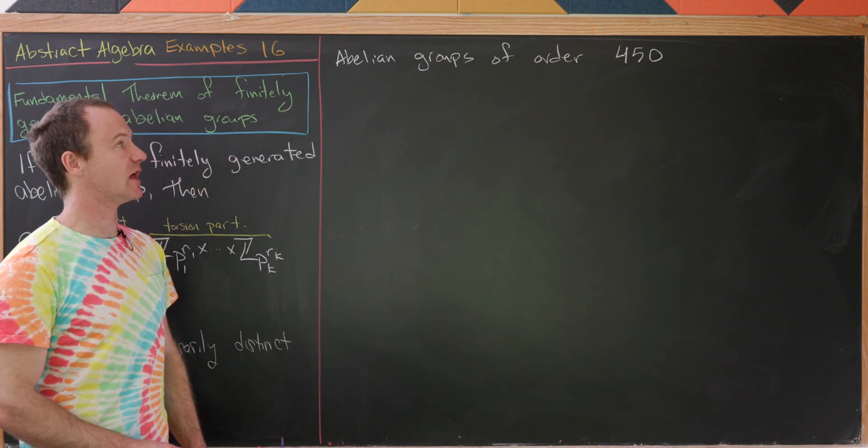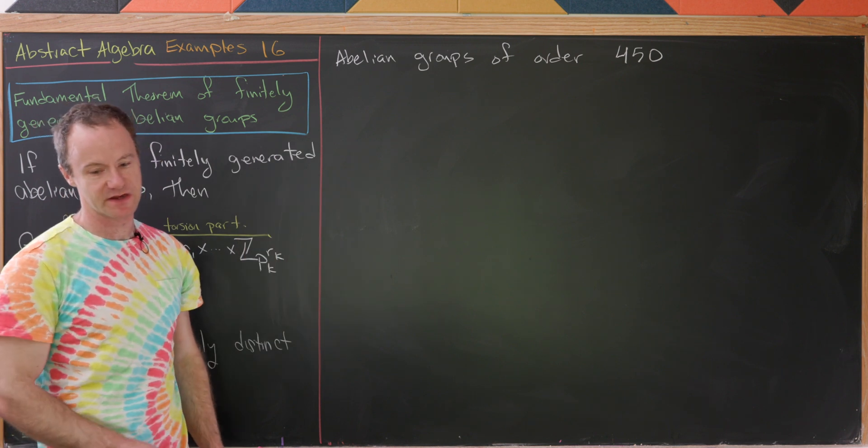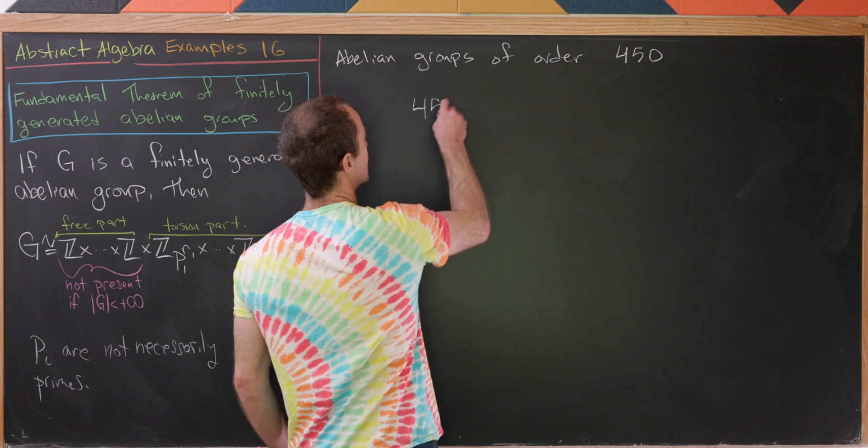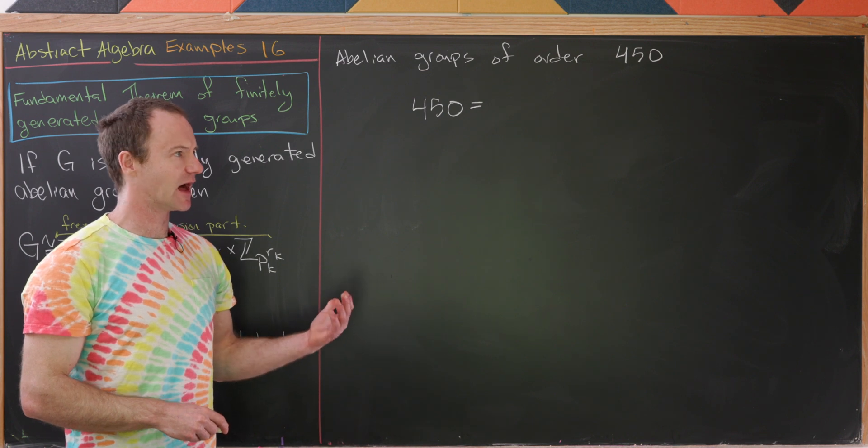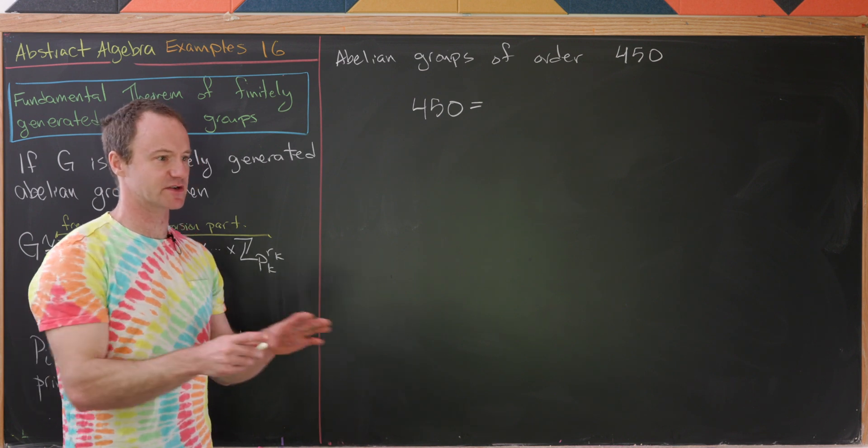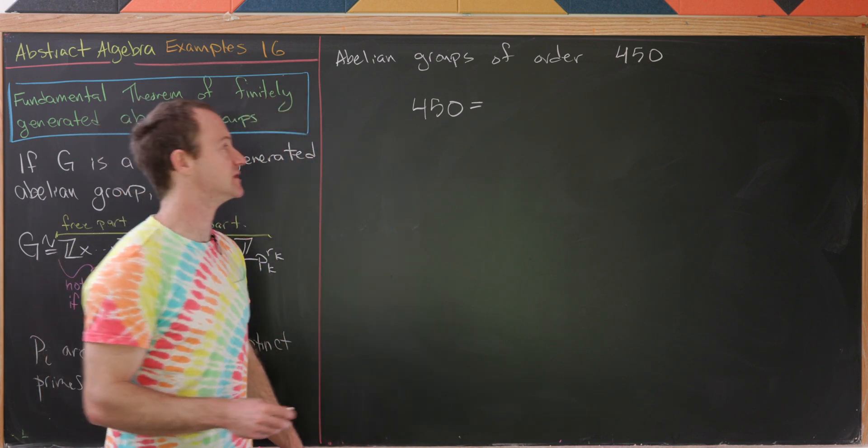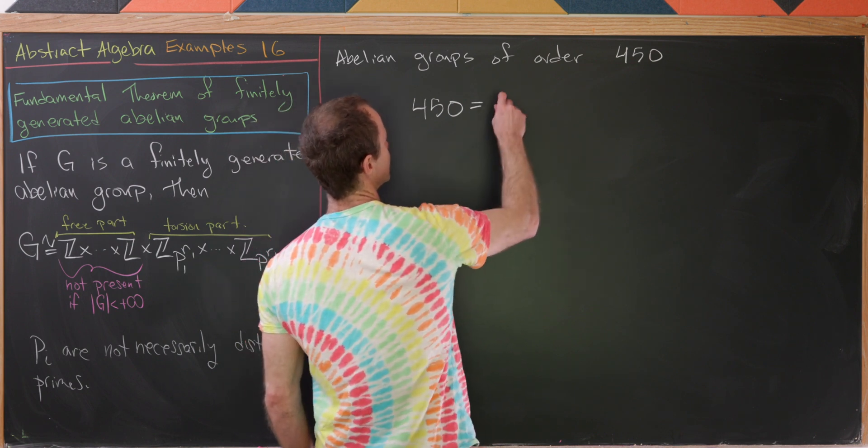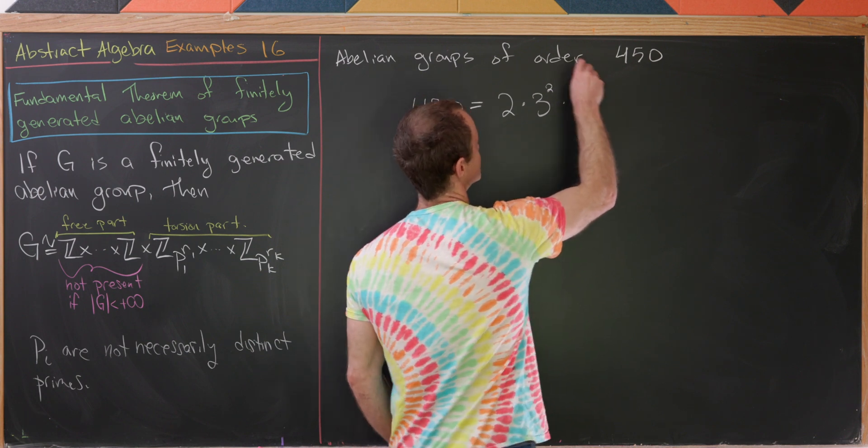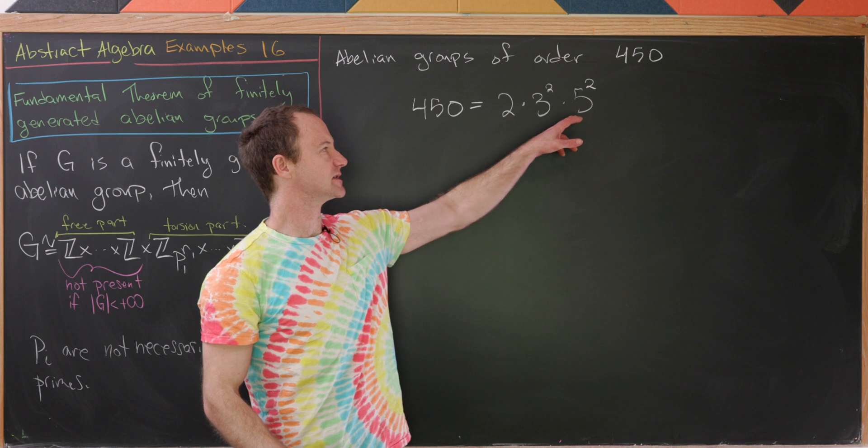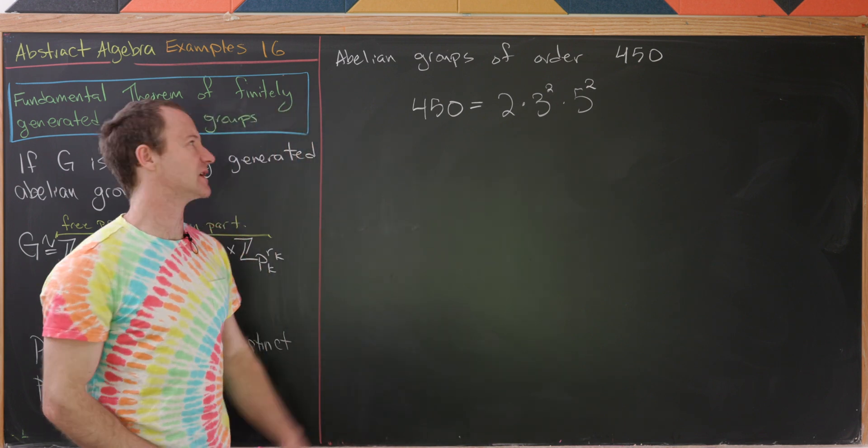Our first example will be to classify all abelian groups up to isomorphism of order 450. Our strategy here will be to factor 450 into primes. And then after that, we'll just decompose that prime factorization into finite groups. You'll see that there's kind of an algorithm to do this. So let's take 450. Notice that is 2 times 3 squared times 5 squared.